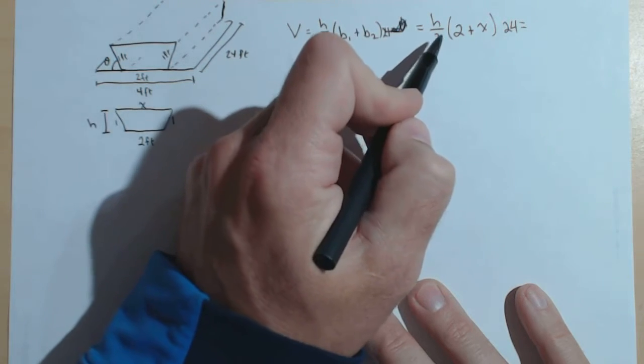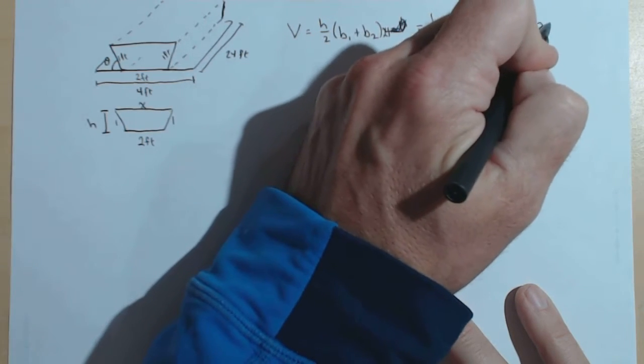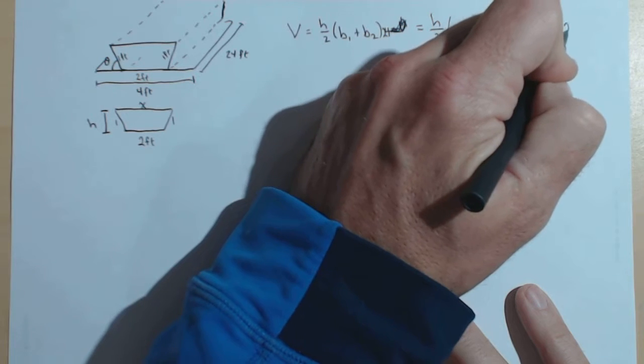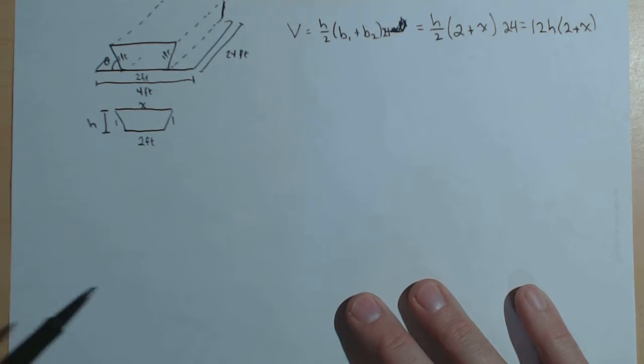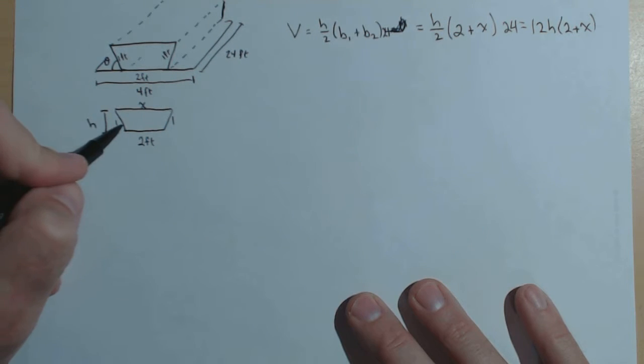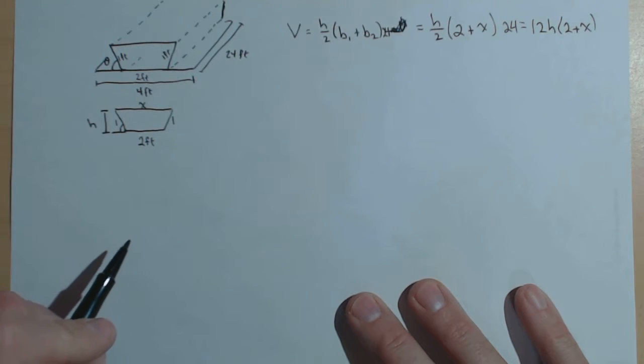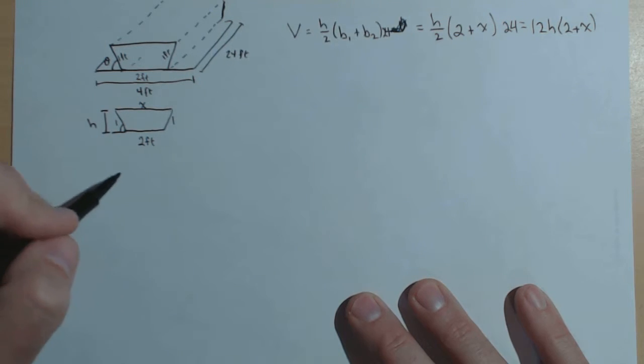We can simplify the 24 and the 2. And let's write this for right now as 12h times 2 plus x. Now, remember what we were saying. We want to maximize the volume with respect to theta. Right? That theta is the angle right here. So let's see if we can get our x and h in terms of theta.